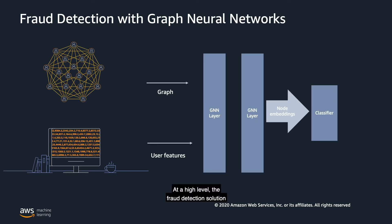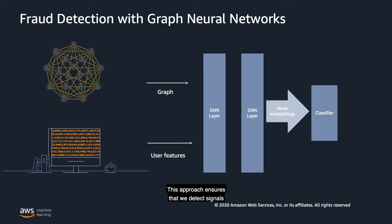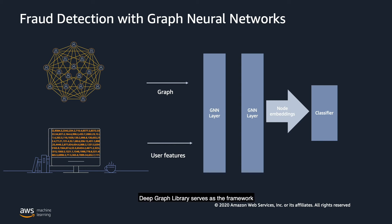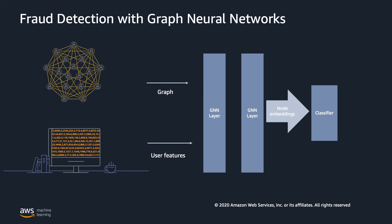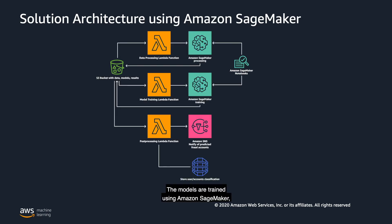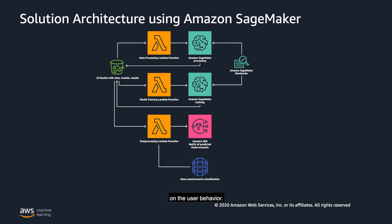At a high level, the fraud detection solution trains a graph neural network to accept an interaction graph as well as some features about the users, in order to classify those users as potentially fraudulent or not. This approach ensures that we detect signals present in the user attributes or features as well as in the connectivity structure and interaction behavior of the users. Deep Graph Library serves as the framework for defining the graph and the graph neural network model that is trained on the graph. The models are trained using Amazon SageMaker, and the solution is contained within an AWS architecture that can automate the detection of malicious users as soon as sufficient data is collected on the user behavior.